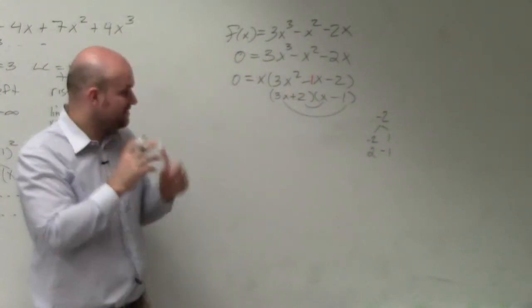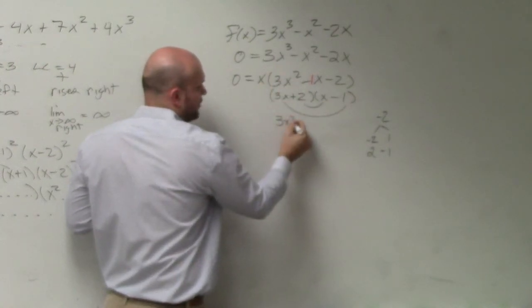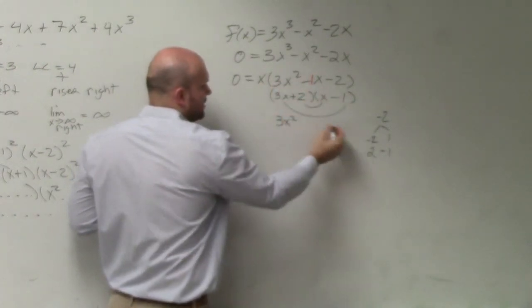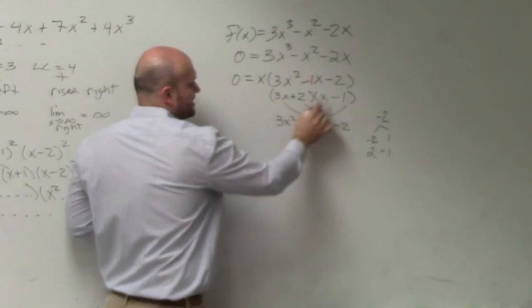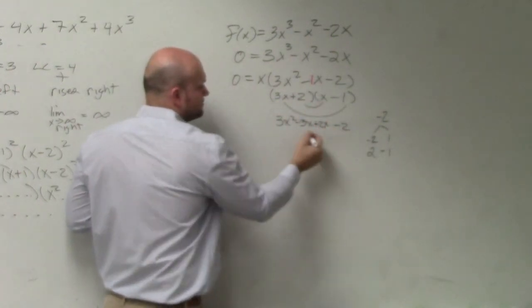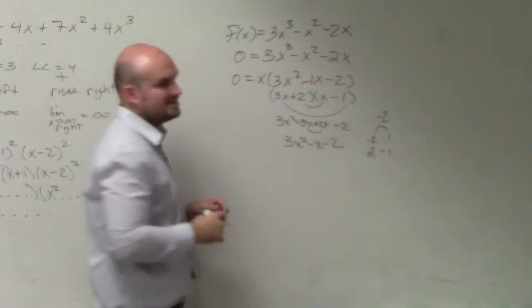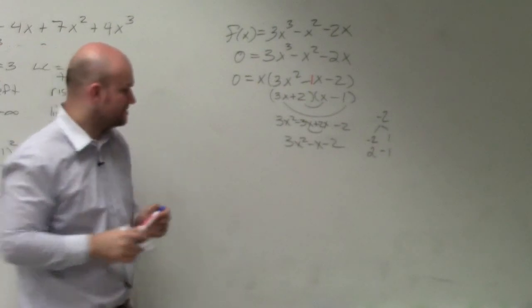Let's check to see if this works. 3x times x is 3x squared. Do FOIL. 2 times negative 1 is negative 2. 3x times negative 3x is negative 3x. 2 times x is 2x. Do you see how I factored that correctly?